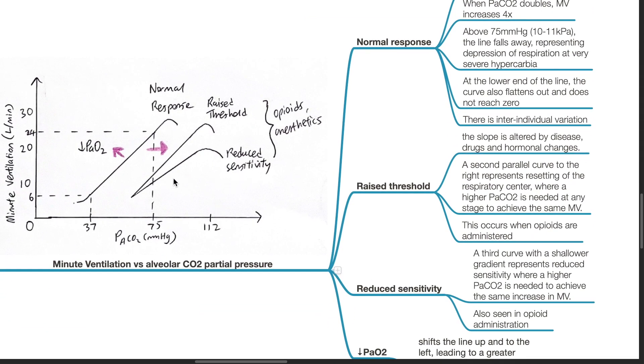A third curve with a shallower gradient represents reduced sensitivity where a higher PaCO2 is needed to achieve the same increase in minute ventilation. This is also seen in opioids or anesthetic administration.